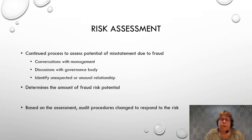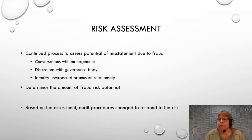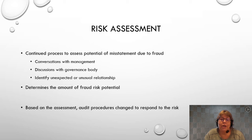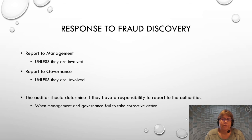A large portion of upfront work involves risk assessment — determining where the highest risk of misstatement lies. This includes evidence gathered from preliminary documents, conversations with management, discussions with the governance body, and identifying any unexpected or unusual relationships. All of this helps determine the amount of fraud risk potential. Based on this assessment, you change your audit procedures to respond — for example, doing more testing or testing in a different way in high-risk areas.